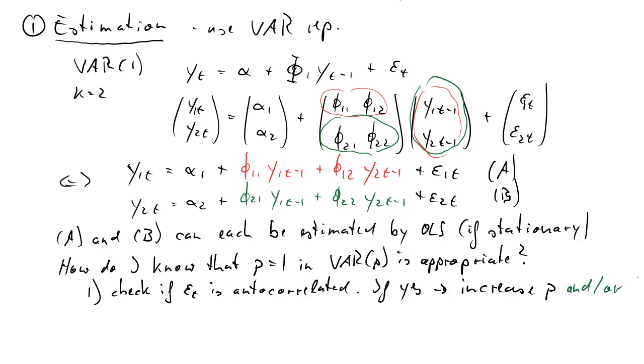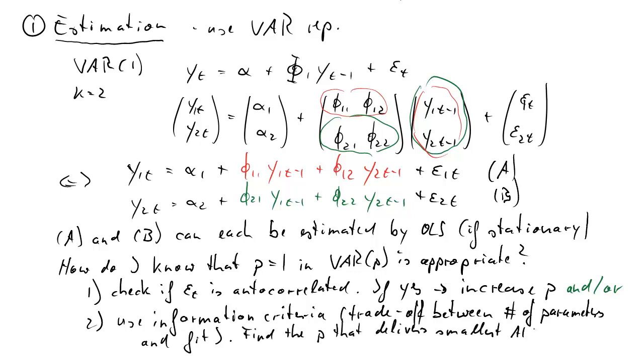Alternatively, or in addition to that, you could also look at the information criterion. These information criteria formalize a tradeoff between the number of parameters and the fit of the model. What we want to do is find that value of p that delivers the smallest value for the information criteria.